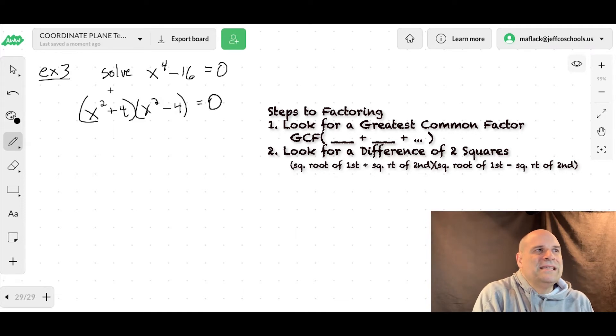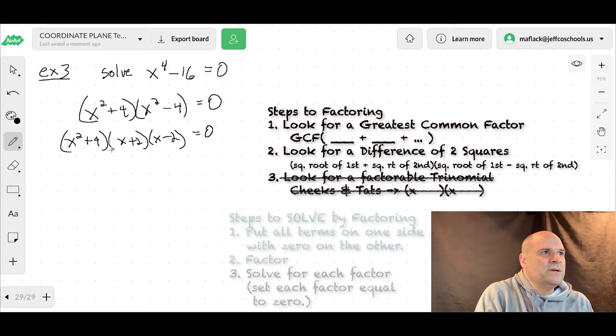So now you can keep factoring because this one you can't factor, but this one is still another difference of two squares. So here's our factor so far. This one is done. So that is what we call prime because you can't factor it anymore. And then this guy is x plus 2, x minus 2 equals 0. Okay. So our x is.